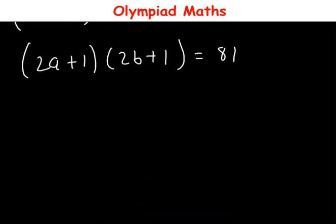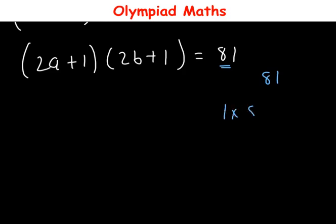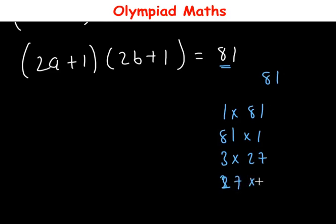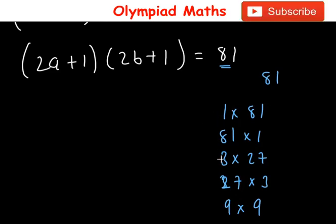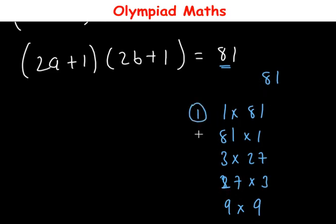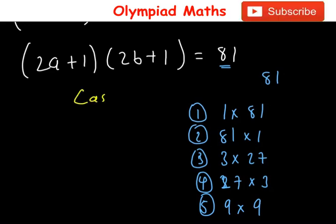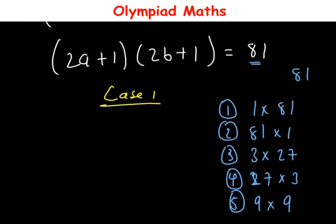Now we factorize 81. The factor pairs of 81 are: 1 × 81, 81 × 1, 3 × 27, 27 × 3, and 9 × 9. So these are the factors of 81. We have five cases to consider.